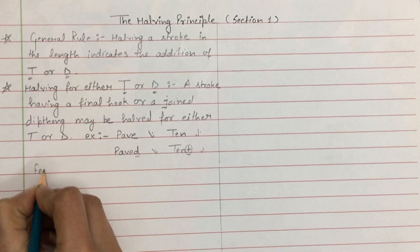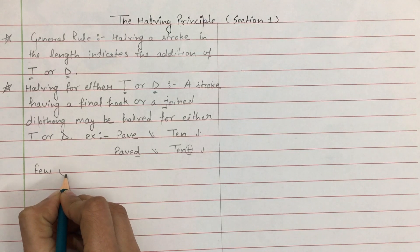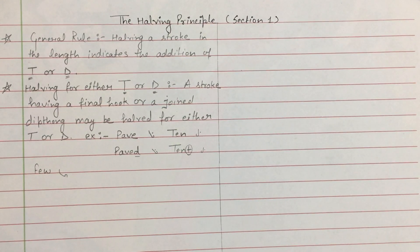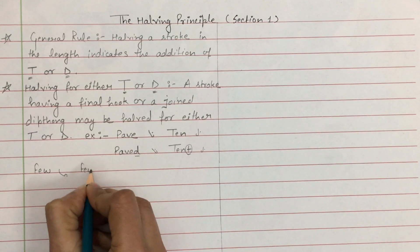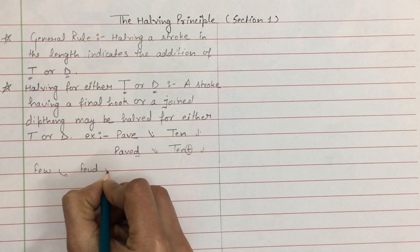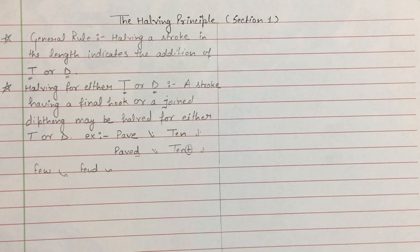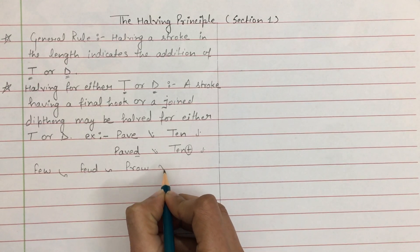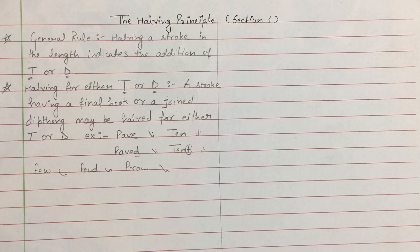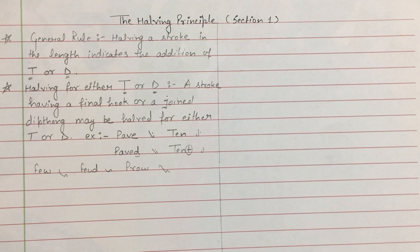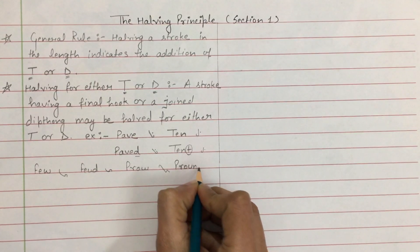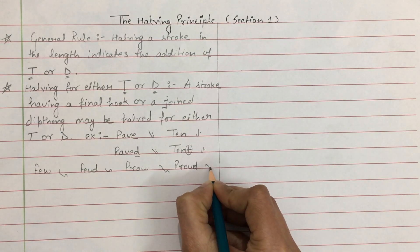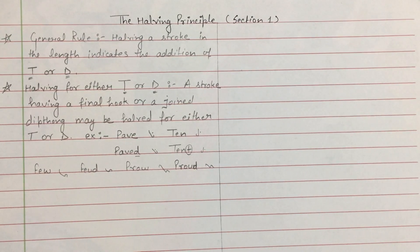अगर आपको word लिखना है 'few' — F and U। But अगर लिखना है 'feud' — F and U, half किया F को, इसमें D add हो चुका है। अगर लिखना है 'proud' — P के साथ R की hook और 'out' diphthong add है। Word 'proud' लिखने के लिए half करते हुए P को लिखेंगे।